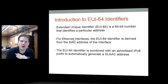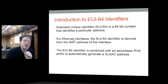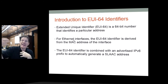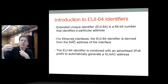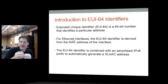EUI-64 is a 64-bit number that identifies a particular address. For Ethernet interfaces, the EUI-64 is derived from the MAC address — it is not the MAC itself, but derived from it. It is combined with the IPv6 prefix: the host hears from routers what the available prefix is, takes that prefix, appends the EUI-64 identifier, and that produces the SLAAC address.